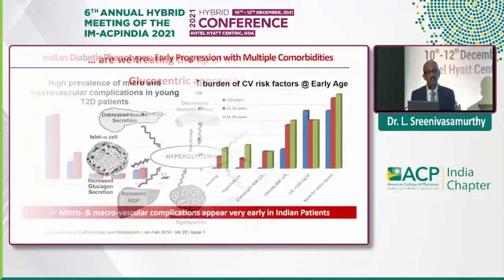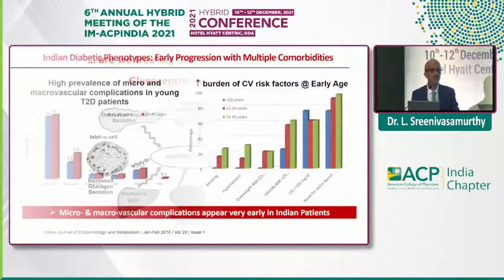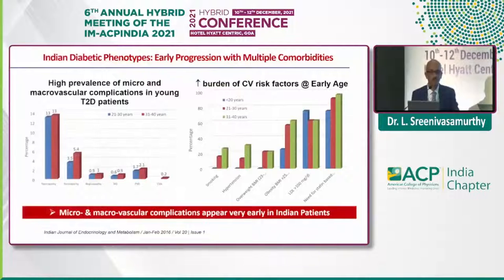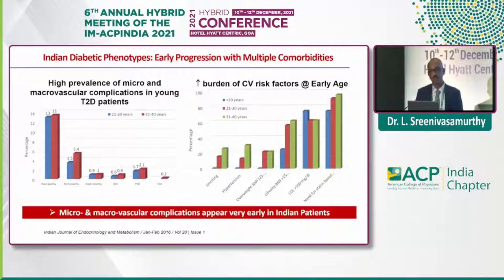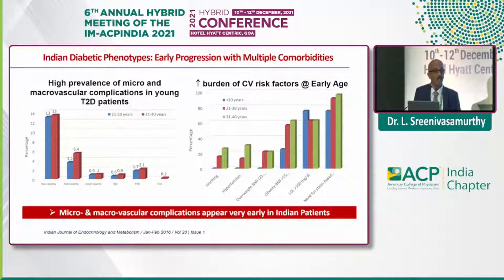This clearly talks about the typical thin fat Indian phenotype, where there is a high prevalence of micro and macrovascular complications with young-onset diabetes, and also an increased burden of cardiovascular risk — a decade early our patients succumb to these complications.